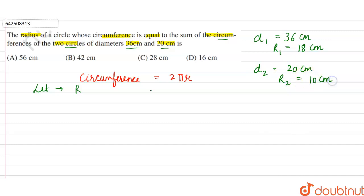Now according to the problem, the radius of the circle whose circumference equals the sum of circumferences of the two circles. So circumference of the circle 2πr equals the sum of circumferences, which is 2πr₁ plus 2πr₂.